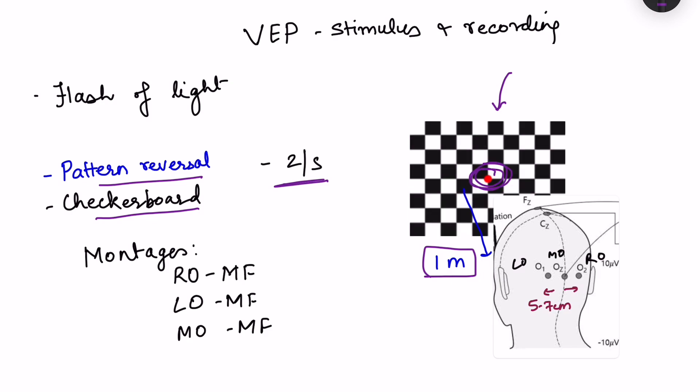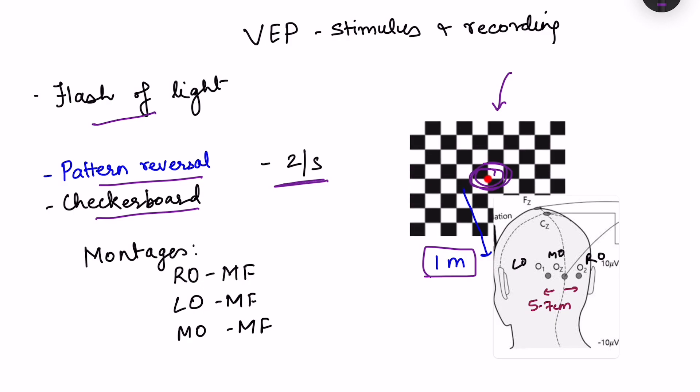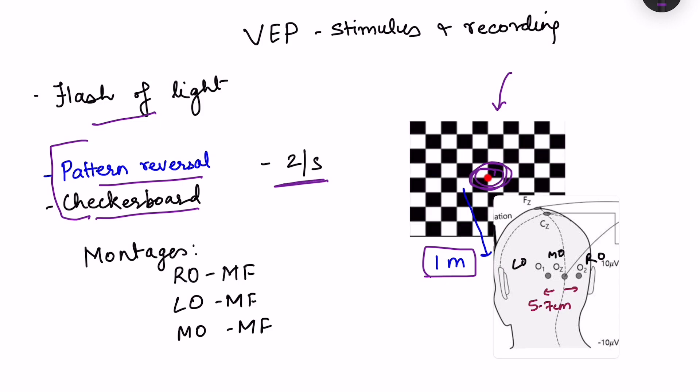There can be other stimulus as well. Flash of light can be given and then evoked response can be monitored. Another is hemifield stimulation which is not very commonly used. So we are mainly talking about this pattern reversal checkerboard stimulus which is commonly used.